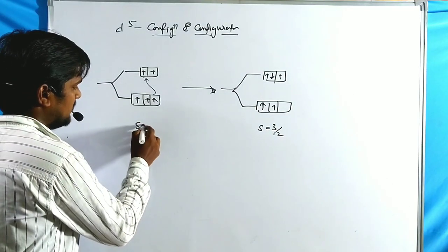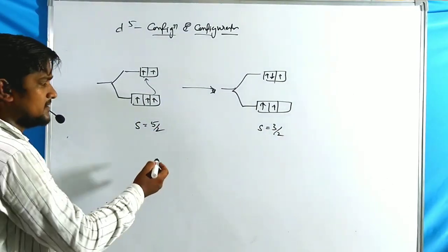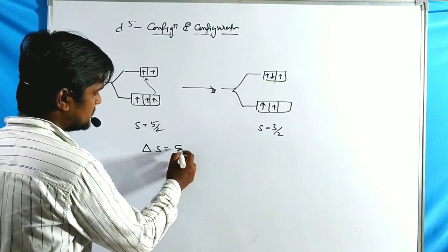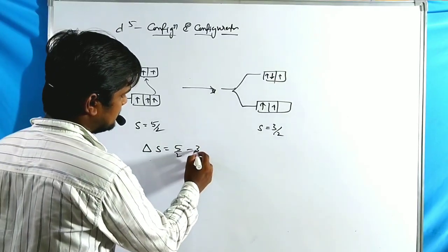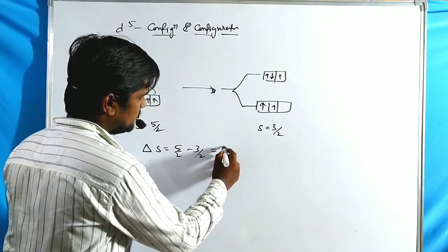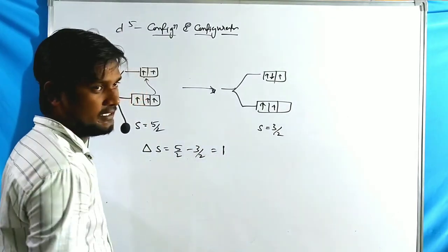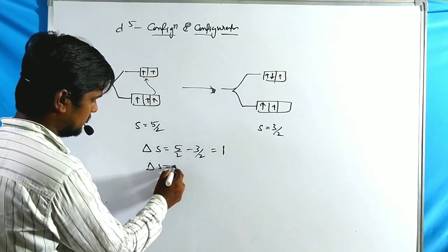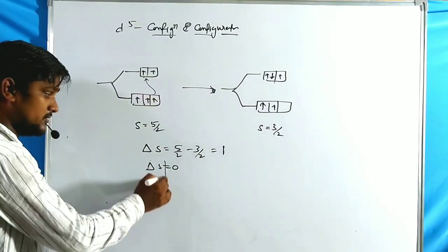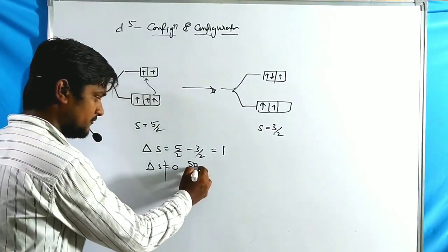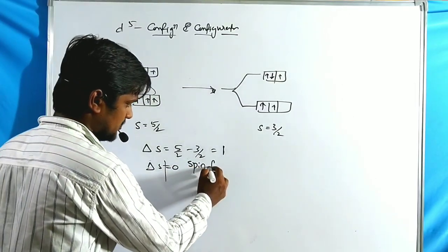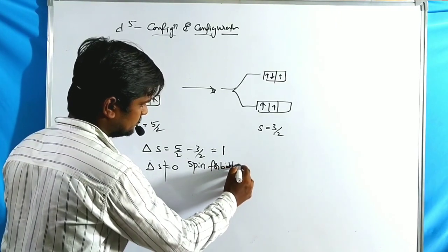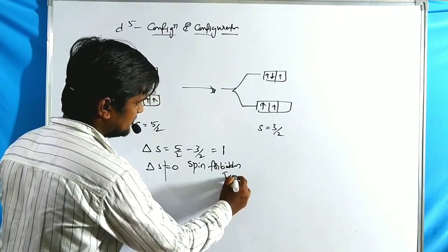The spin value for the ground state is 5/2. Checking the delta S value: 5/2 minus 3/2 equals 1, so delta S is not equal to zero. That means this is a spin-forbidden transition.